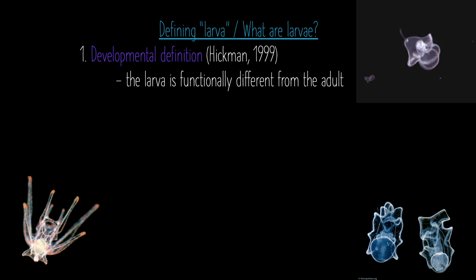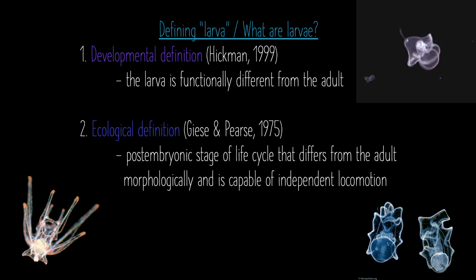One definition is a developmental one put forth by Hickman in 1999, which states that the larva is functionally different from the adult. An ecological definition by Giza and Pierce in 1975 states that the larva is the post-embryonic stage of the life cycle that differs from the adult morphologically and is capable of independent locomotion. Combining these, the larval stage is the stage that differs from the adult both morphologically and functionally and is capable of independent locomotion. In some cases, larvae were given their own species names hundreds of years ago because people thought they were entirely different organisms.